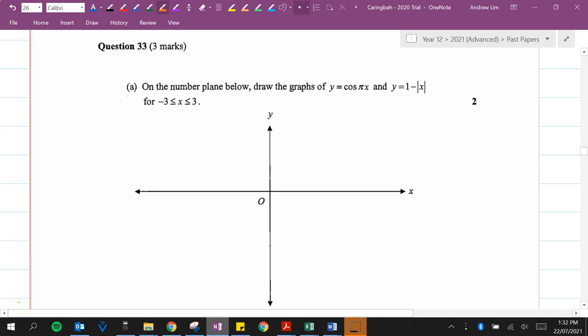Okay, welcome back to another video on my channel. It's your teacher, Mr. Lim here. In this video, we're looking at question 33 of the Caringenbar 2020 trial. On the number plane below, draw the graphs of y equals cosine pi x and y equals 1 minus the absolute value of x for the domain from negative 3 to 3.